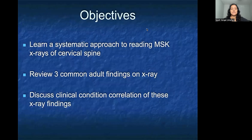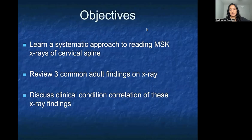Our objectives are to learn a systematic approach to reading MSK x-rays of the cervical spine, to review three common adult findings on x-ray, and to discuss the clinical condition correlation of these x-ray findings.